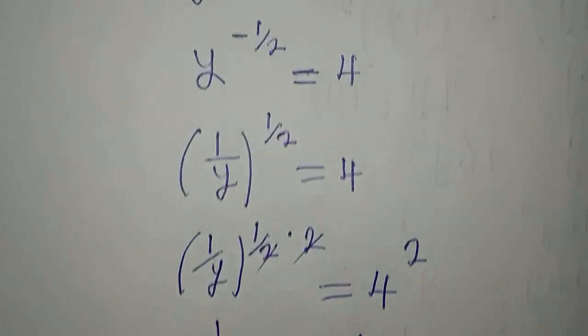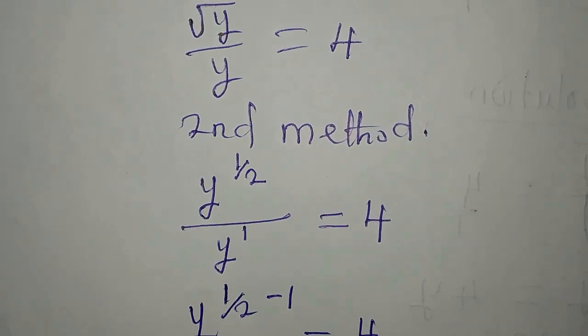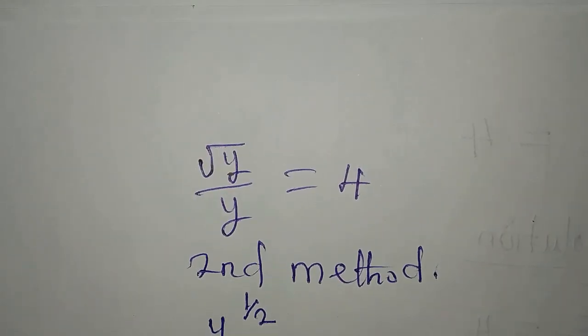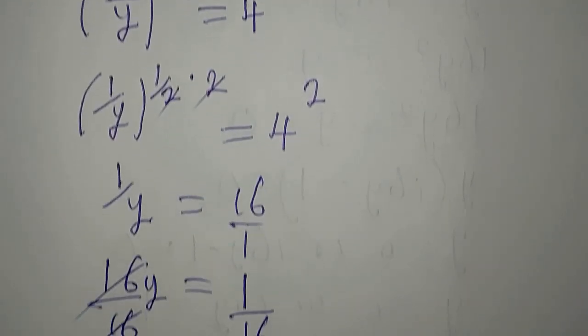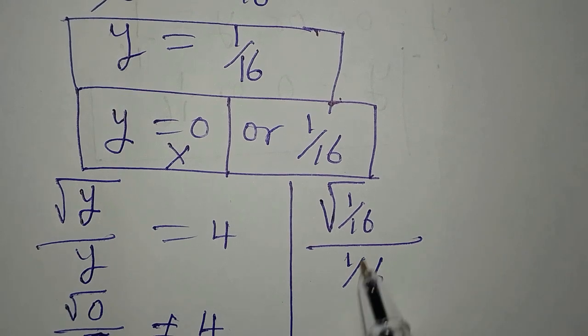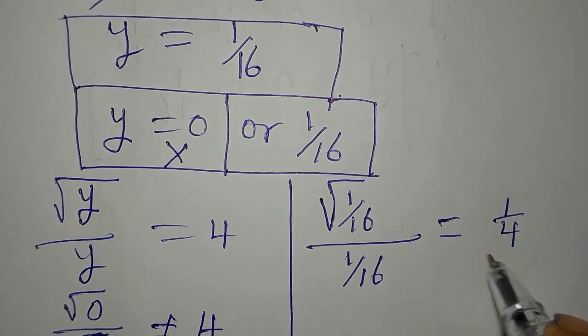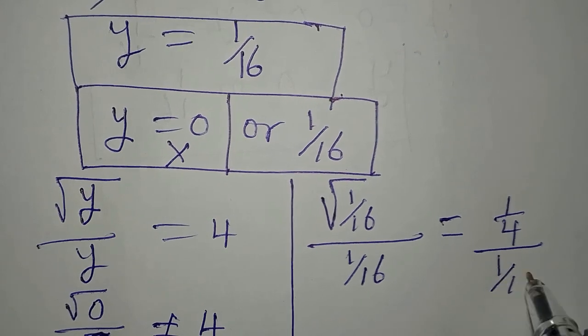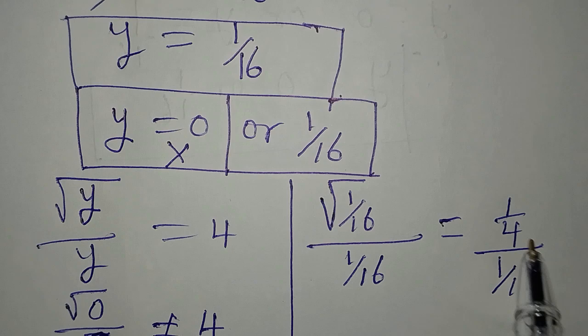This will give us 4 because we had 4 on the right hand side. We have square root of y over y equals 4, so there is 4 on the right hand side. We are looking at how we get 4 from here. This is the same thing as 1 over 4 divided by 1 over 16. That is correct because square root of 1 is 1, square root of 16 is 4.